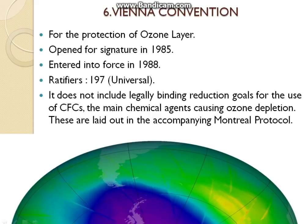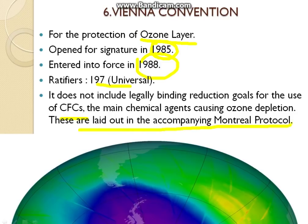The sixth one is the Vienna Convention — a very important multilateral environment agreement for the protection of the ozone layer. It was open for signature in 1985 and entered into force in 1988. It is a universal convention with 197 ratifiers. It does not include legally binding reduction goals for the use of CFCs, which are the main chemical agents causing ozone depletion, but these are laid out in the accompanying Montreal Protocol.